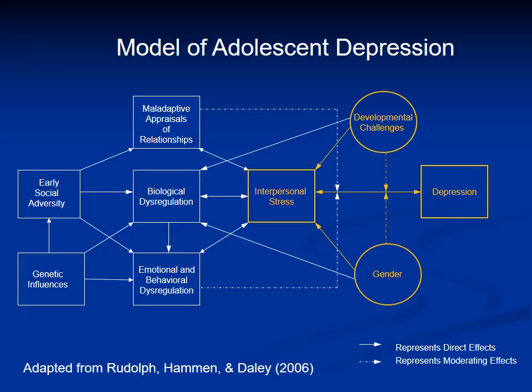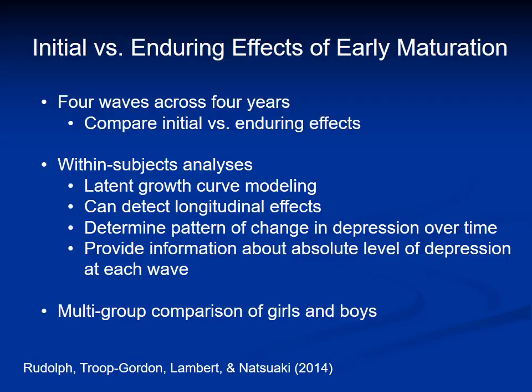We were interested in better understanding how puberty affects depression over time, so we conducted analyses separating out the initial versus the enduring effects of pubertal timing. We used four waves of data across four years and conducted within-subjects analyses using latent growth curve modeling, which can detect longitudinal effects across several waves, determine the pattern of change in depression over time within individuals, and provide information about youth's absolute level of depression at each wave. We also conducted a multi-group comparison of girls and boys to examine gender differences in the growth of depression associated with early puberty.